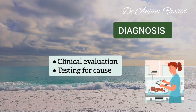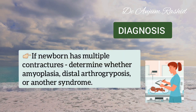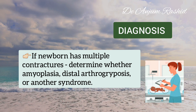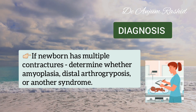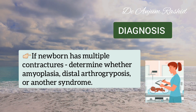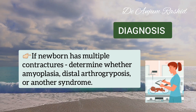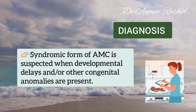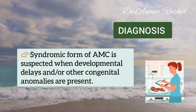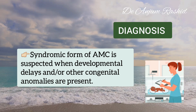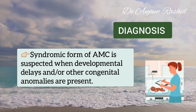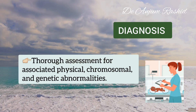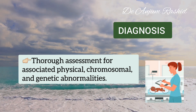The diagnosis is by clinical evaluation and testing for the cause. If a newborn has multiple contractures, the initial evaluation should determine whether the condition is amyoplasia, distal arthrogryposis, or another syndrome where multiple contractures are associated with unrelated congenital anomalies or metabolic disorders. A syndromic form of AMC is suspected when developmental delays or other congenital anomalies are present, and such patients should be evaluated for central nervous system disorders and monitored for progressive neurologic symptoms. Evaluation should also include a thorough assessment for associated physical, chromosomal, and genetic abnormalities.